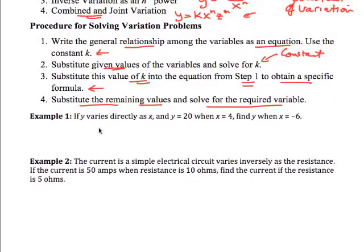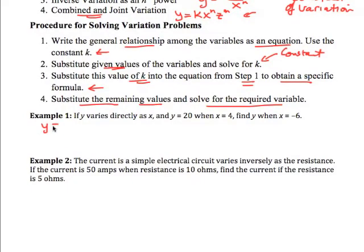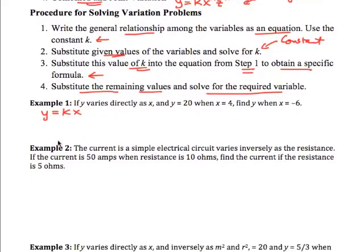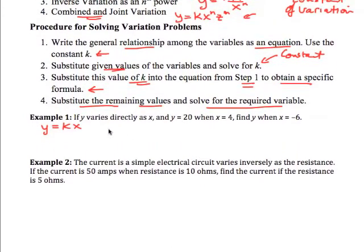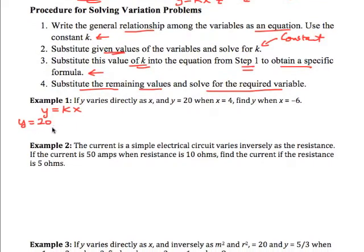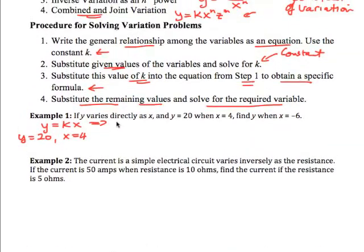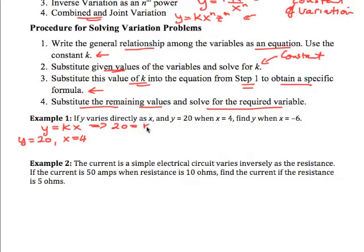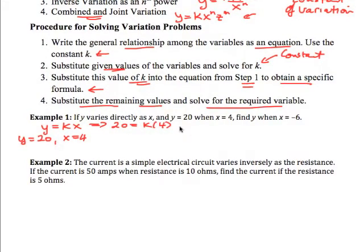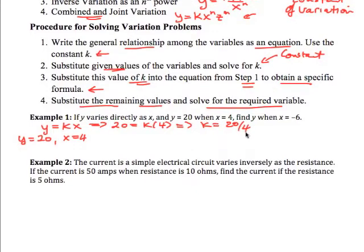Well let's look at this simple one here. We see that y varies directly as x. So what we have is y is equal to k x. Now we have that when y is 20, that's when x is equal to 4. So this implies then that 20 would be equal to k times 4, which implies that k would be 20 over 4 which is 5.